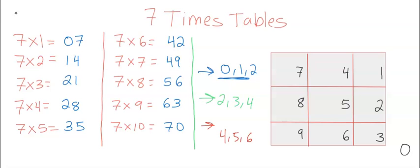So we have here 7 times 1, 7 times 2, 3, 4, all the way to 10, okay? And here I made a box, 9 squares.